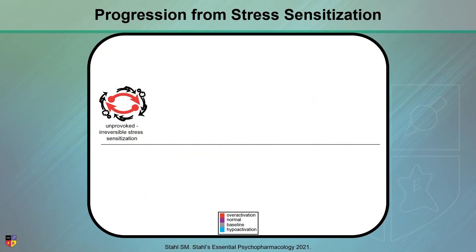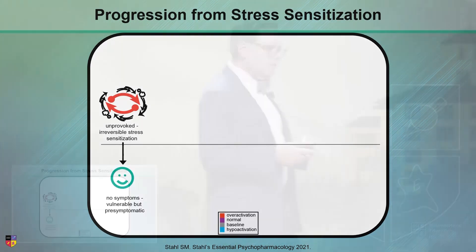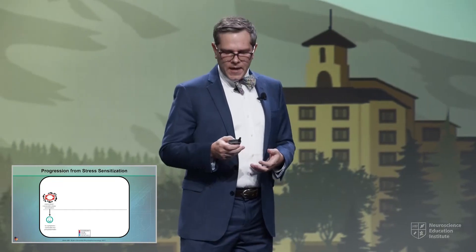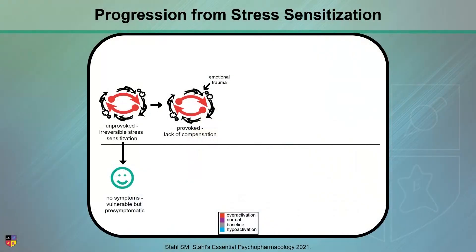Now, how do things progress from this point? When we have the unprovoked irreversible stress sensitization, that may not necessarily give rise to symptoms — we may have, if you will, a normal phenotype. However, when that emotional trauma is reintroduced to that sensitized circuit, we may begin to see prodromal symptoms.